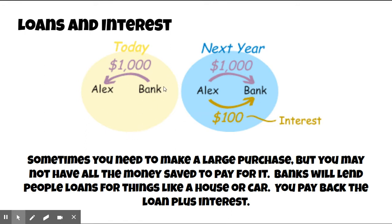Let's look at this picture. Alex needs to borrow and get a loan for $1,000. The bank is going to give him $1,000 — see where the arrow is pointing. Well, he has to pay back the loan; he can't just take money and not pay it back. Alex is going to pay back the $1,000, but the bank is also going to say their fee is $100 of interest. So he has to pay back the $1,000 plus the $100 interest, making his total $1,100.